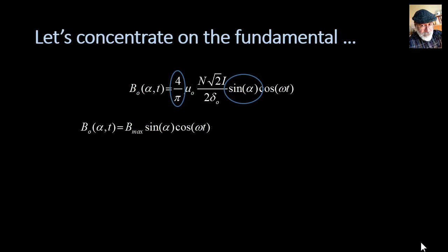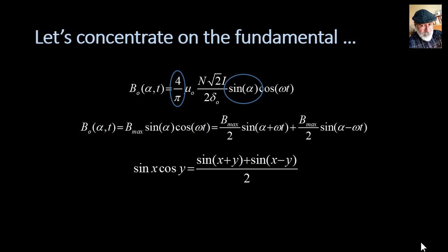Does it remind you of something? Of course it does. It reminds you of that identity that we saw at the beginning. Sine of x cosine of y. So we can decompose that expression into the sum of two sinusoids. Both have half the amplitude, Bmax over 2. One is sine of alpha plus omega t and the other is sine of alpha minus omega t. You realize that those two sinusoids, one is moving to the right and one is moving to the left.